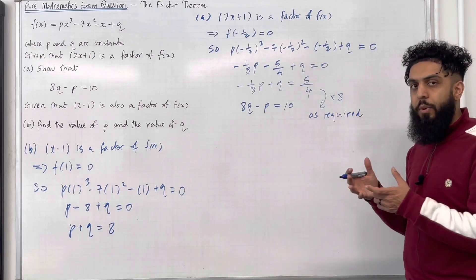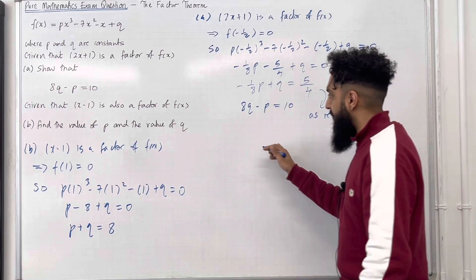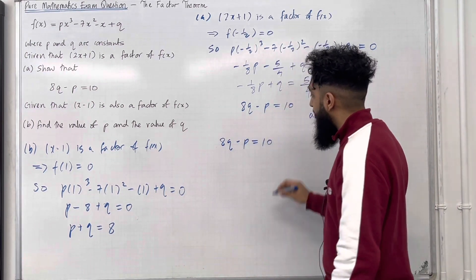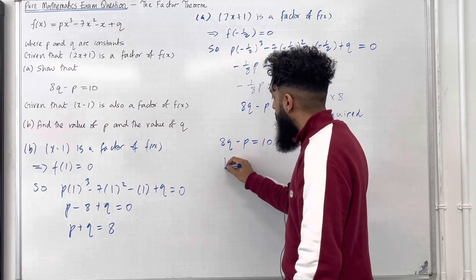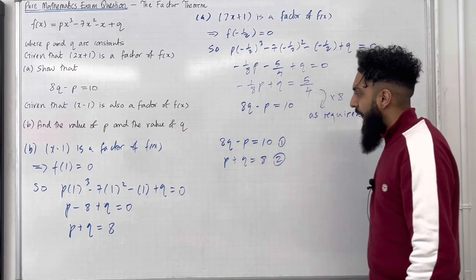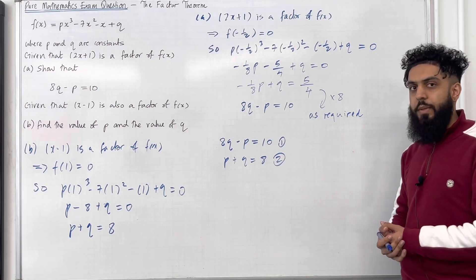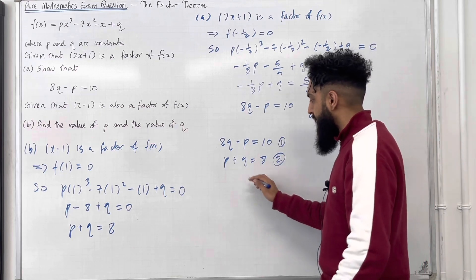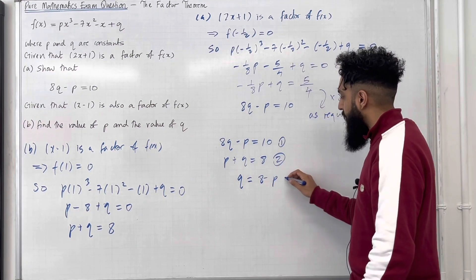So I've got two equations involving p and q. Equation 1 from part a is 8q minus p equals 10. Equation 2 from part b is p plus q equals 8. I need to solve equations 1 and 2 simultaneously. I'll use the method of substitution. In equation 2, making q the subject gives q equals 8 minus p. I'll call this equation 3.